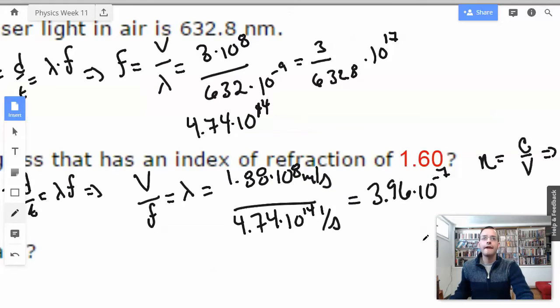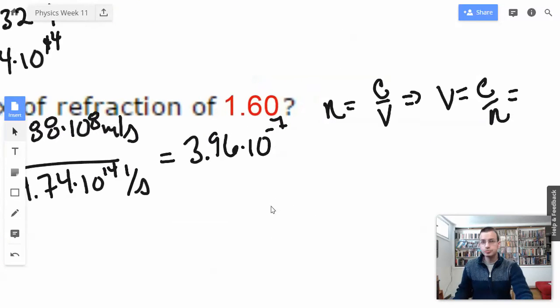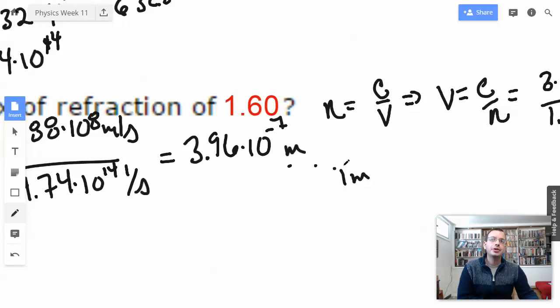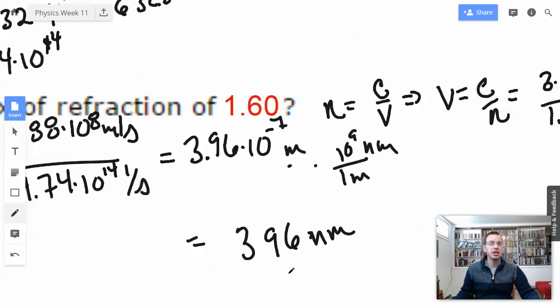And this is meters. I'm going to multiply this by 1 meter per 10 to the 9th nanometers, which gives us 10 to the negative 7th times 10 to the 9th is 10 to the 2nd. That gives us 396 nanometers. Score.